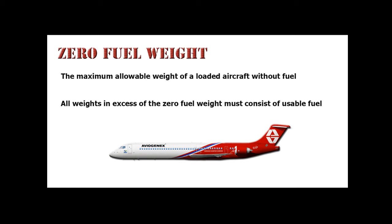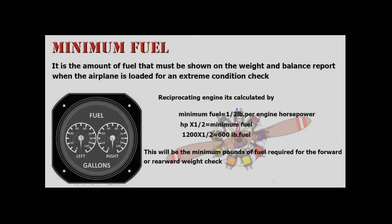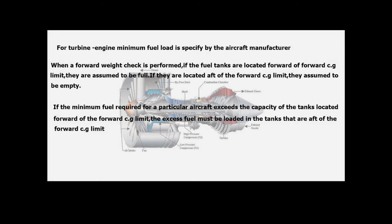Zero Fuel Weight is the maximum allowable weight of a loaded aircraft without fuel; all weight in excess of the zero fuel weight must consist of usable fuel. Minimum Fuel is the amount of fuel that must be shown on the weight and balance report when the airplane is loaded for an extreme condition check. For a reciprocating engine, minimum fuel is calculated as: minimum fuel = 1/2 lb per engine horsepower. For example, 1,200 HP × 1/2 = 600 lb minimum fuel. For turbine engines, minimum fuel load is specified by the aircraft manufacturer.